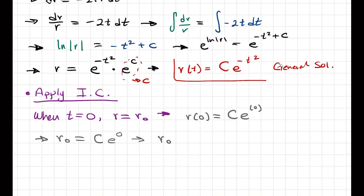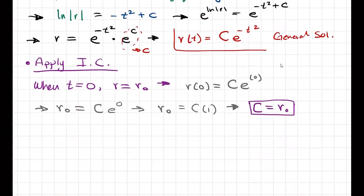And then we know what e to the zero is—we did another problem, so we know that this is r_naught equals to C times one. And therefore we get then that our constant of integration C is equal to this r_naught. So now I can write my final solution.